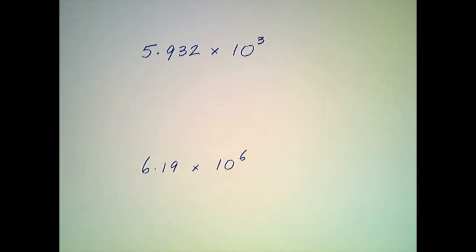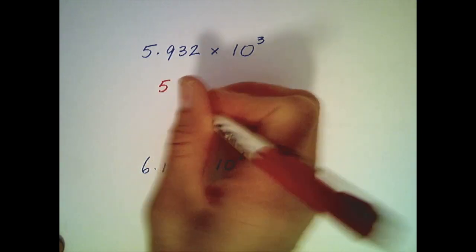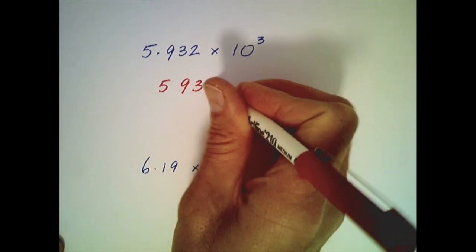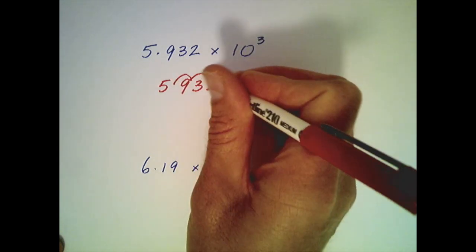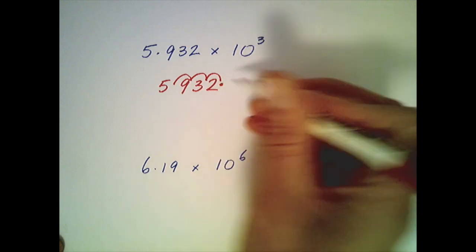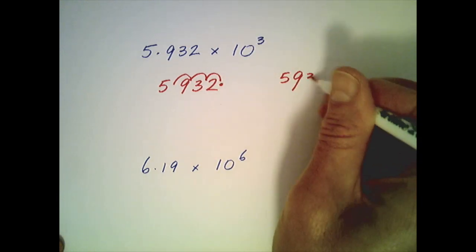In the case of 5.932 times 10 to the 3 we're going to shift the decimal point three positions to the right. So we put the non-zero digits down and we move the decimal point slowly one at a time until we get to the third spot and our solution is 5932.